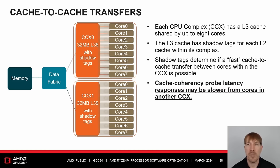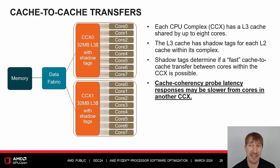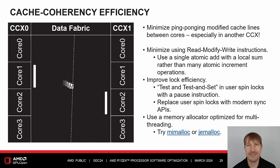The AMD Zen 4 microarchitecture implements a large L3 cache shared by up to 8 cores inside each CPU complex, abbreviated as CCX. The L3 cache maintains shadow tags for each L2 cache within its complex. Shadow tags determine if a fast cache-to-cache transfer between cores within the CCX is possible. Cache coherency probe latency responses may be slower from cores within another CCX. For StormPeak, imagine up to 12 CCX attached to the data fabric.